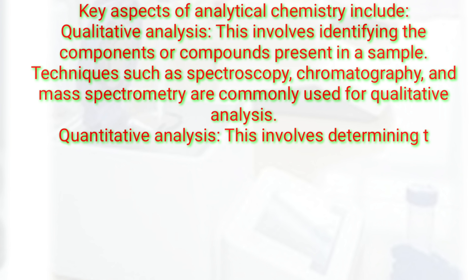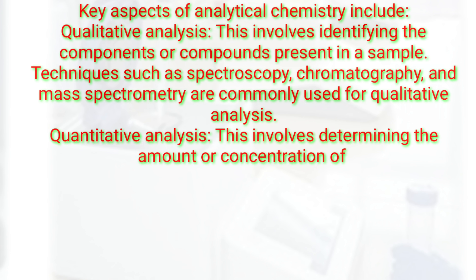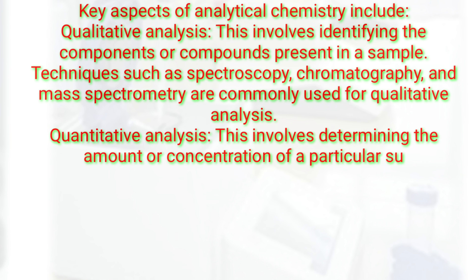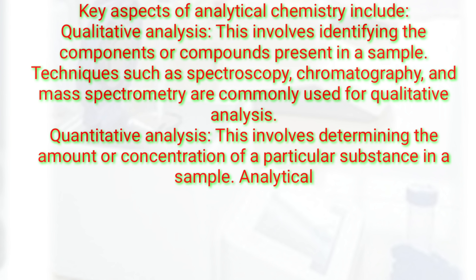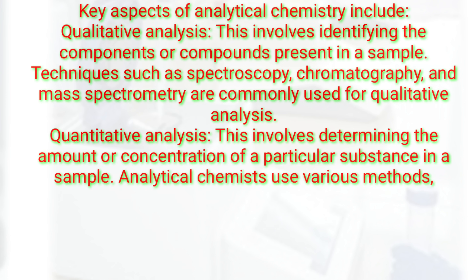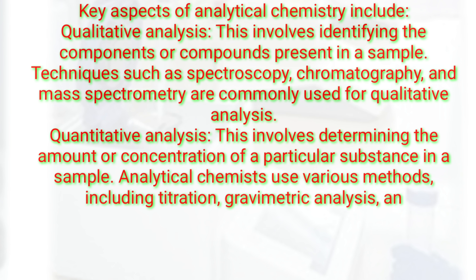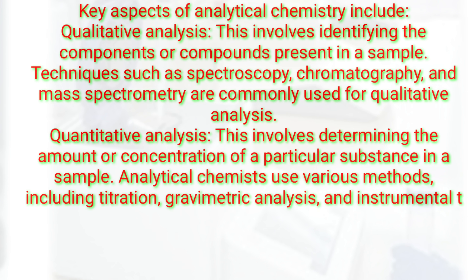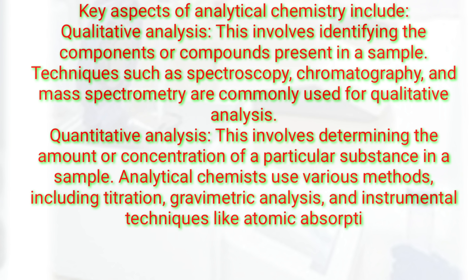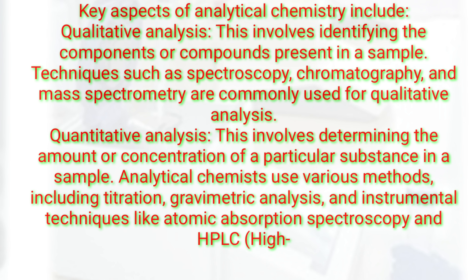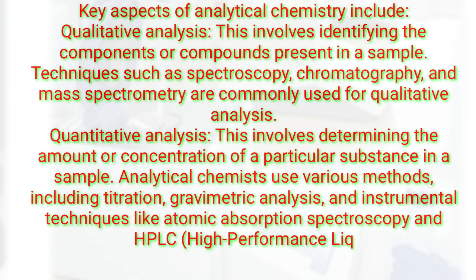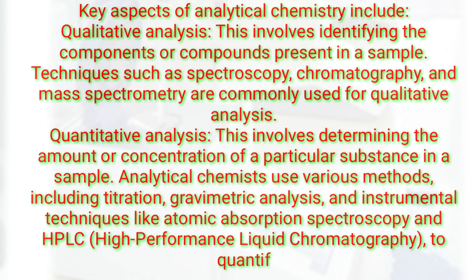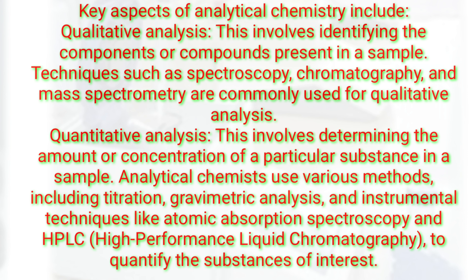Quantitative analysis involves determining the amount or concentration of a particular substance in a sample. Analytical chemists use various methods including titration, gravimetric analysis, and instrumental techniques like atomic absorption spectroscopy and HPLC — high-performance liquid chromatography — to quantify the substances of interest.